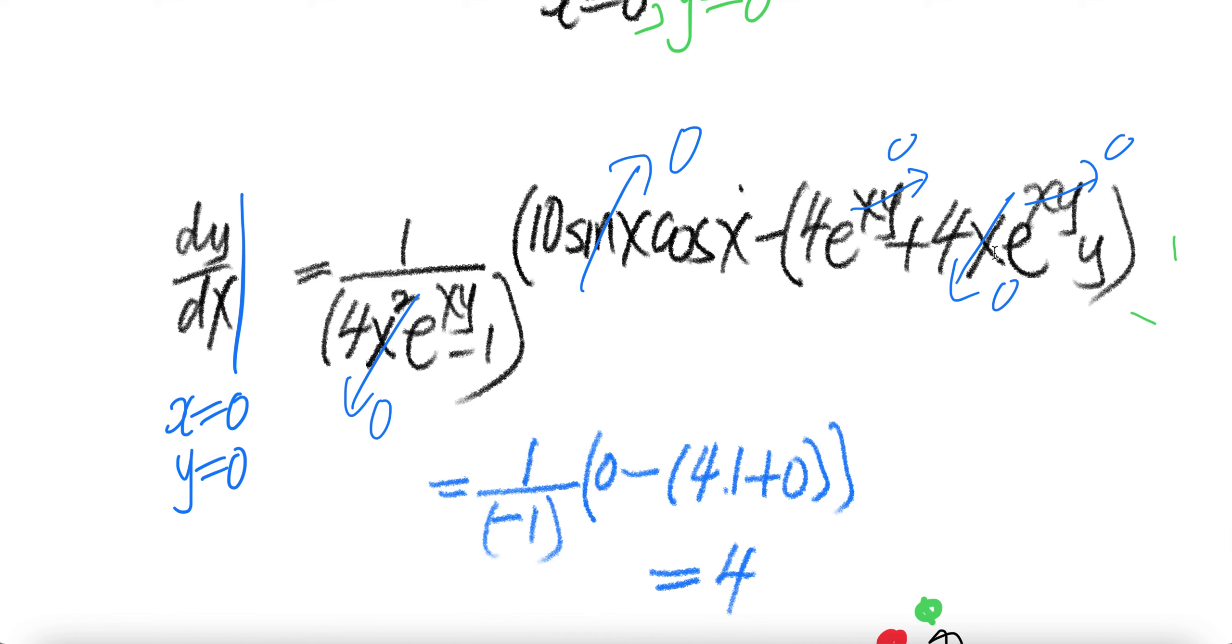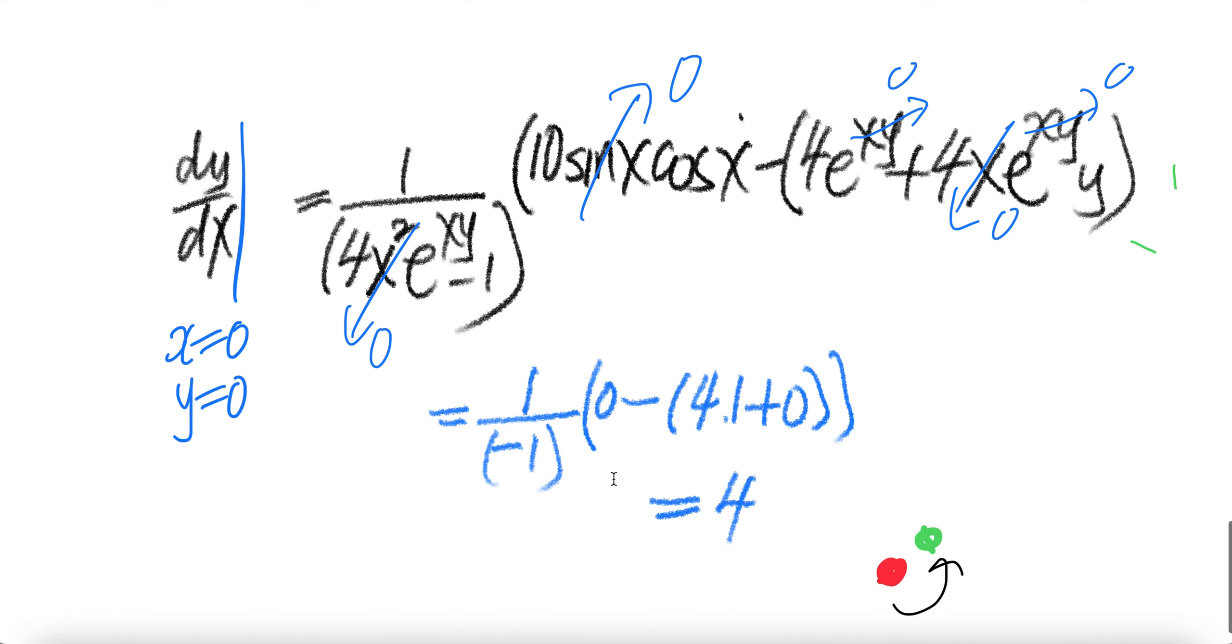This is zero, this is zero. E to the power of zero is one, negative four. And then this is zero. You have negative one. Negative four divided by negative one will be four. Done.